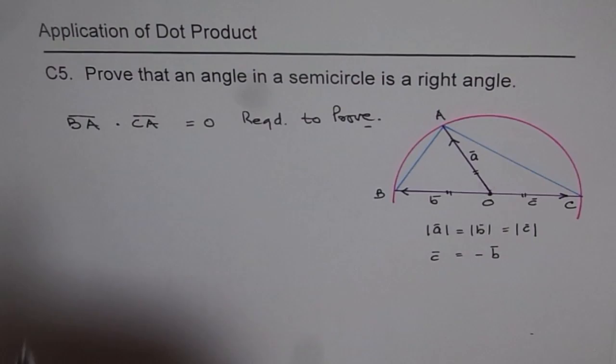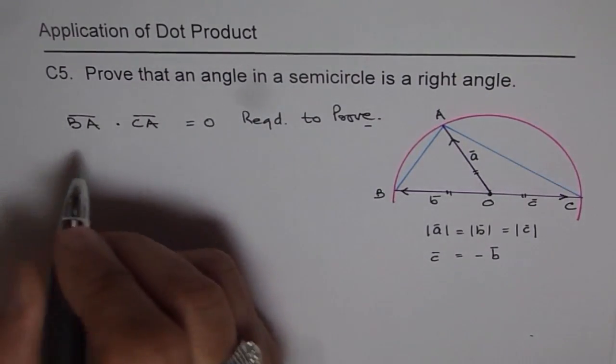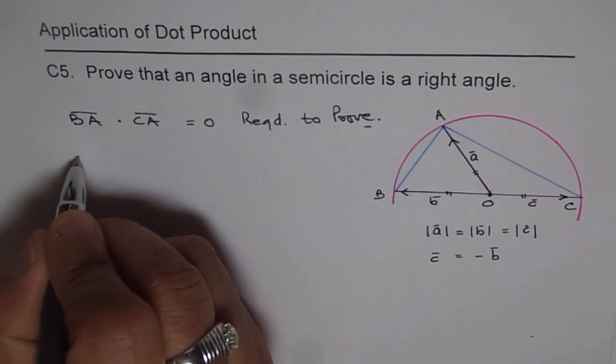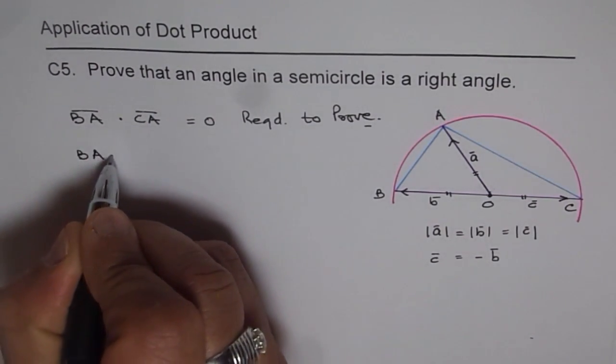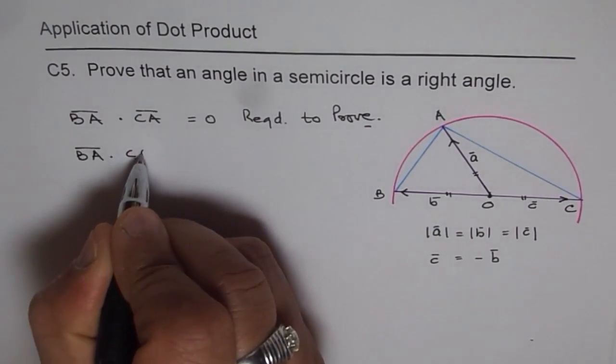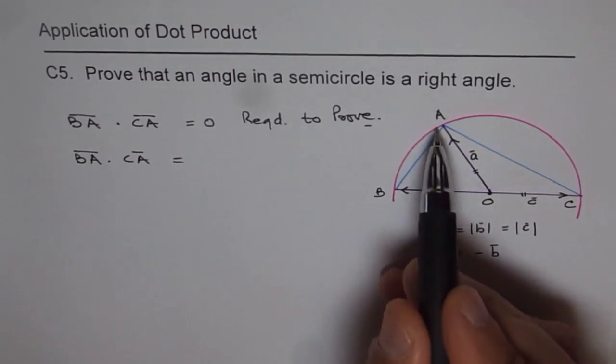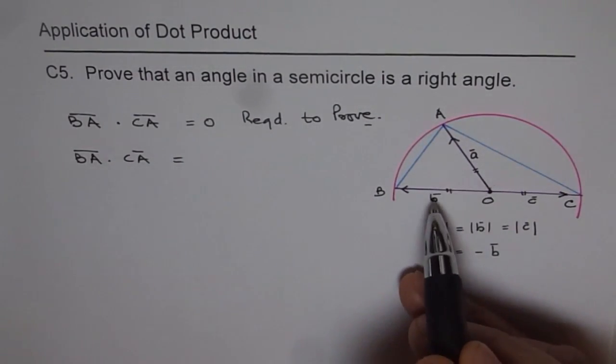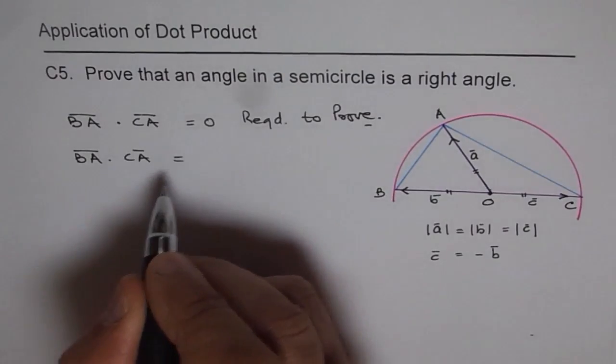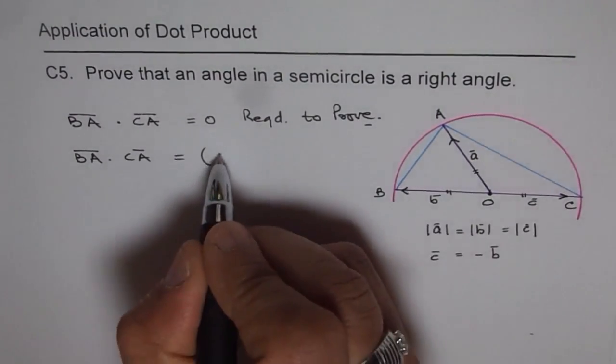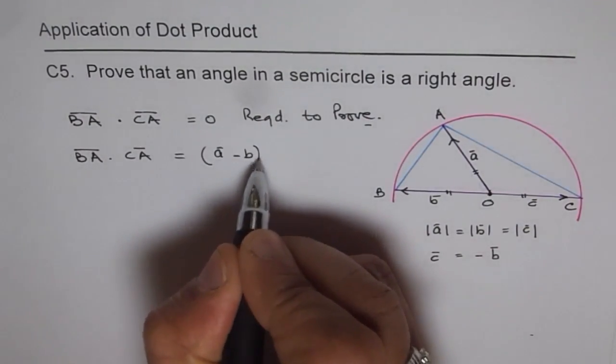Now let's start with BA dot CA. So what is BA dot CA in this triangle? Let's start from BA dot CA. What is it? Now what is BA? So BA will be vector A minus B. So we have this as vector A minus B, A minus B dot...